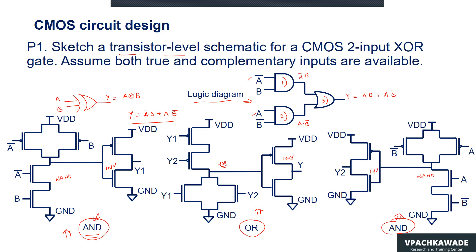Looking at the input combinations: the first NAND gate has inputs A-bar and B, the second NAND gate has inputs A and B-bar. Both are applied to PMOS and NMOS switches. The outputs Y1 and Y2 from the two NAND gates become the inputs to the OR gate, where Y1 and Y2 are applied to both NMOS and PMOS switches. The final output Y gives the Boolean equation of the exclusive OR function.